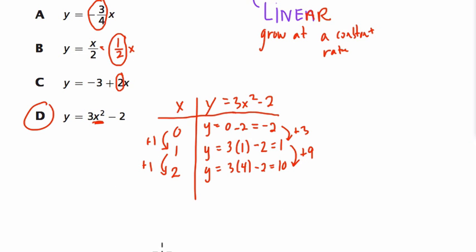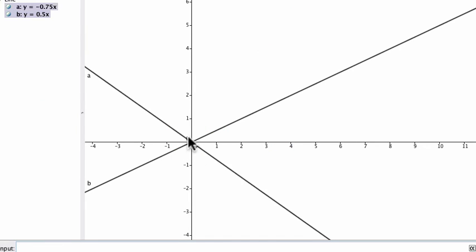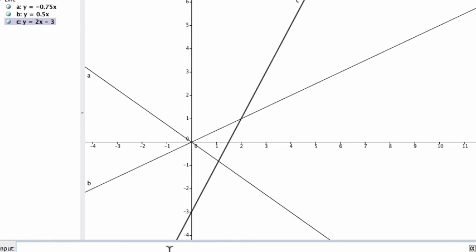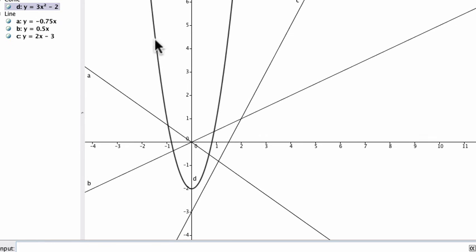It's not going to go through the origin here like the other ones. So this time, y equals negative 3 plus 2x. You can see it's starting down here at negative 3. And then if we graph the final one, the one that's the answer, 3x squared minus 2, we'll see a beautiful parabola here. You see this U shape, that's the parabola. And you can see that it's definitely curved and nonlinear. All right, I hope this helps.